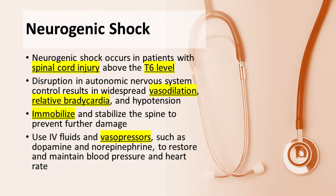Neurogenic shock occurs in patients with spinal cord injury above the T6 level. The disruption in autonomic nervous system control results in widespread vasodilation, relative bradycardia, and hypotension. In patients with suspected spinal cord injury, immobilize and stabilize the spine to prevent further damage during initial assessment and management.